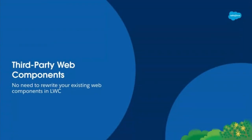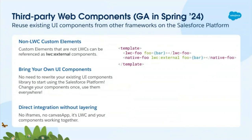Now let's talk about third-party web components. Moving on to our next feature announcement — another popular feature request — which is support for bringing third-party web components into LWC. Many of you may have custom elements that were built not using LWC, built outside of the Salesforce platform, that you're using on other apps. With third-party web component support, you can now reference these non-Salesforce UI components from your LWC template and bring them into the Salesforce platform without having to rewrite them in LWC.